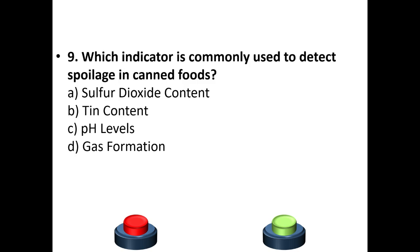Ninth question: Which indicator is commonly used to detect spoilage in canned foods? A. Sulfur dioxide content, B. Tin content, C. pH levels, D. Gas formation. Your answer is option D: Gas formation.